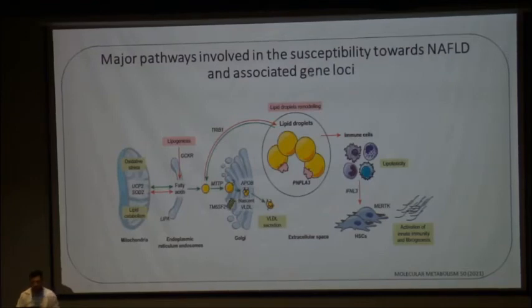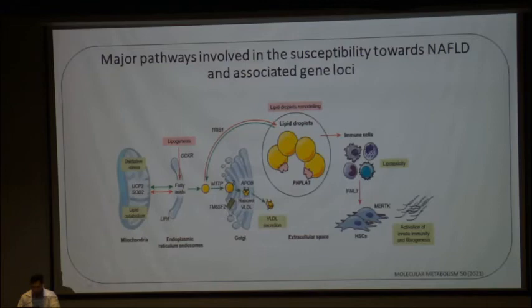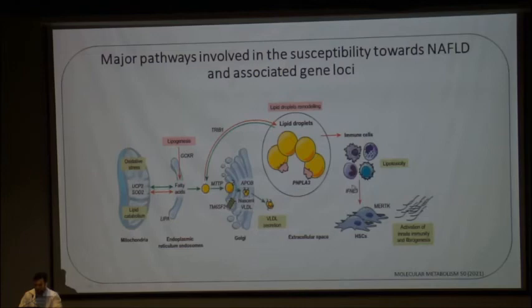These are the major pathways shown to increase susceptibility to NAFLD and the gene loci. From the mitochondria, UCP2 and superoxide dismutase 2 are involved in oxidative stress and lipid catabolism. On the endoplasmic reticulum, glucokinase regulatory protein, lipin gene, and microsomal triglyceride transfer protein promote lipogenesis. On the Golgi, TM6SF2 and APOB have been implicated in VLDL secretion. There is also abnormality in remodeling of lipid droplets, secondary to PNPLA3 polymorphism. Variants can also be noted in immune cells or hepatic stellate cells, ultimately predisposing to increased incidence of NAFLD, NASH, and fibrosis.